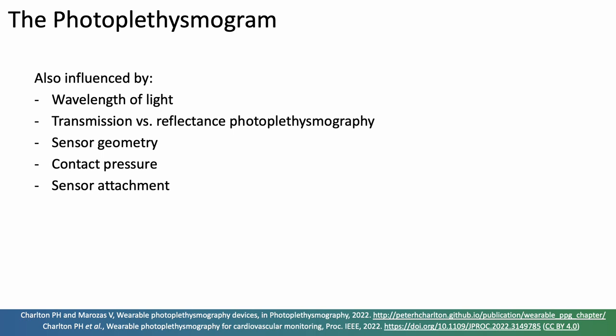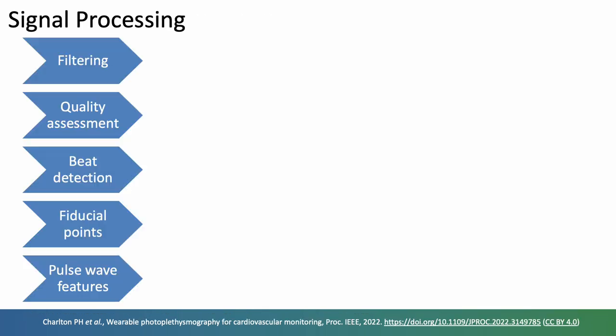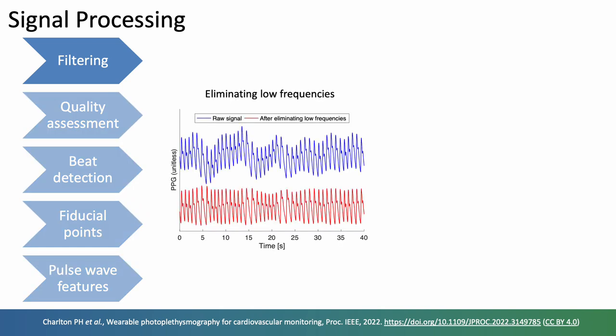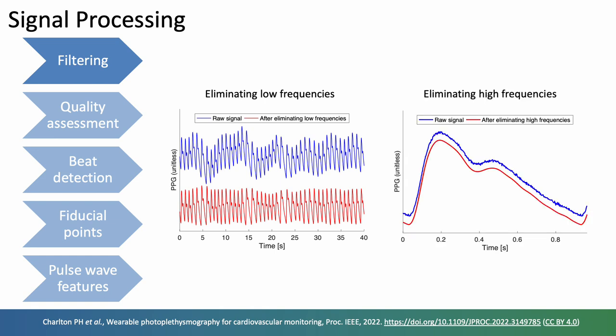Having obtained the signal, the next step is to process it, and I'll take you through the five steps which are traditionally taken to process PPG signals. Firstly, the signal is filtered to eliminate unwanted frequency content. Low frequencies are eliminated, so here we go from the raw signal in blue to the red signal where low frequencies have been eliminated, and also high frequencies are eliminated, here zooming in on one pulse wave.